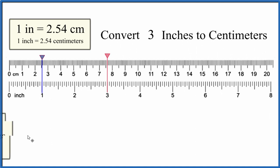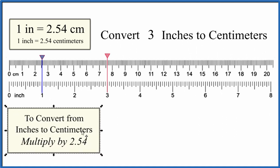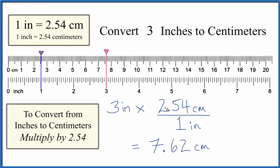So when we convert from inches to centimeters, we're just going to multiply the inches by 2.54. One inch is 2.54 centimeters. So we take our three inches and we multiply by 2.54, and that's 2.54 centimeters in one inch.